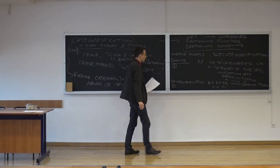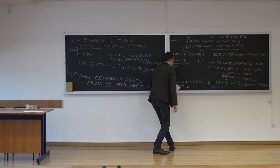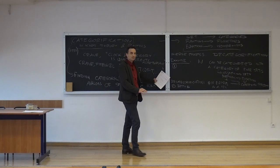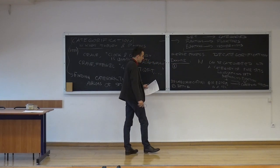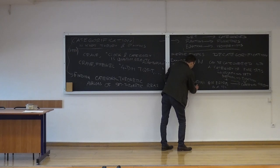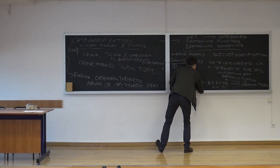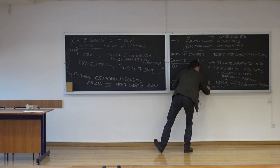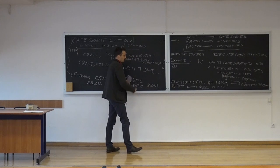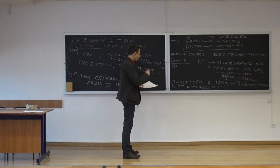Another important example is Betti numbers. Betti numbers roughly tell you how many holes of a certain dimension there are in a manifold. These Betti numbers can be found as ranks of homology groups. So you can go from Betti numbers to a more complicated structure like homology groups or complexes of vector spaces. This step — replacing simple numbers with homology groups — is an example of categorification.